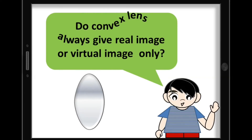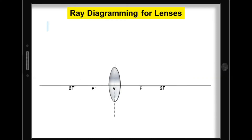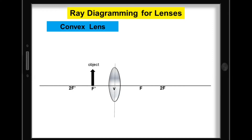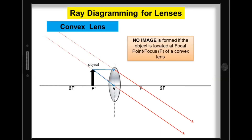Do convex lenses always give a real image or virtual image only? Let's have another sample ray diagramming for convex lens. For this ray diagramming, the object is located at the focal point or focus. We can use the PF ray and the V ray. Notice that the refracted rays are parallel. Even the virtual refracted rays are parallel. So we can conclude that no image is formed if the object is located at the focal point of a convex lens.